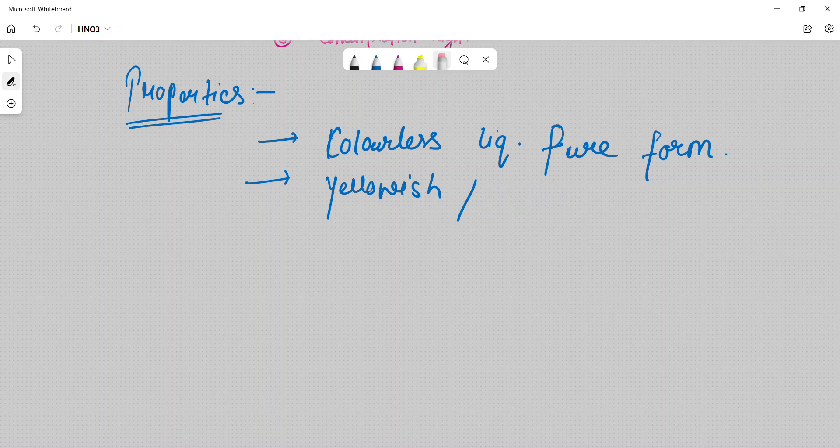Due to the presence of nitrogen dioxide. This brownish color, due to NO2, nitrogen dioxide as an impurity present, as an impurity.